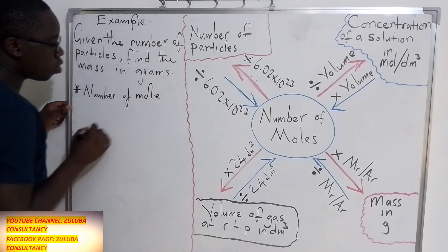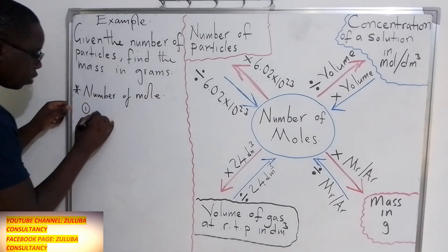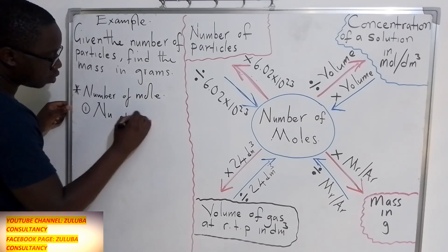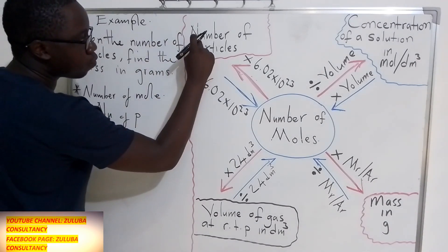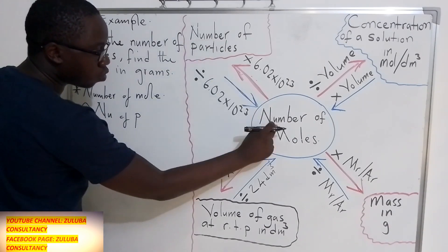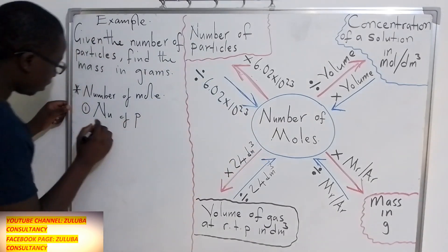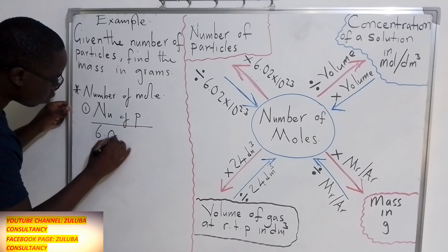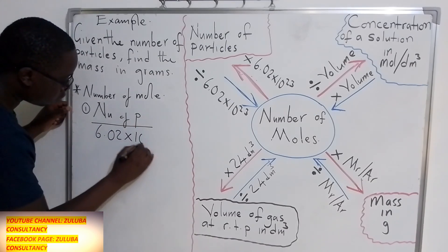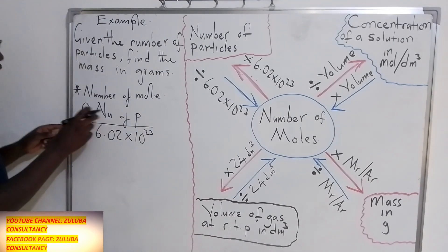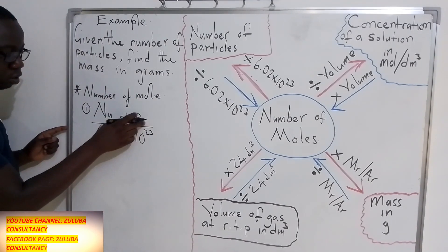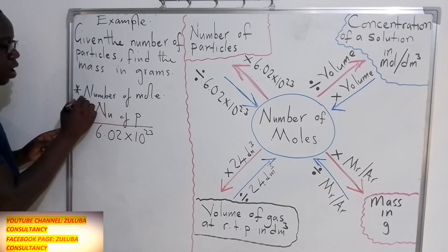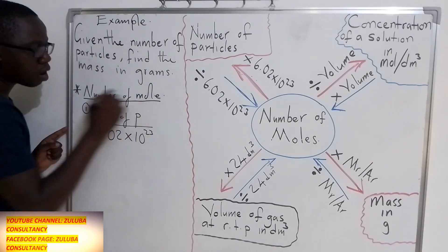To find the number of moles, we need to start with the number of particles. To go from number of particles to number of moles, we divide. You divide the number of particles by 6.02 × 10²³ — Avogadro's number. When you divide the number of particles by 6.02 × 10²³, you have managed to find the number of moles.